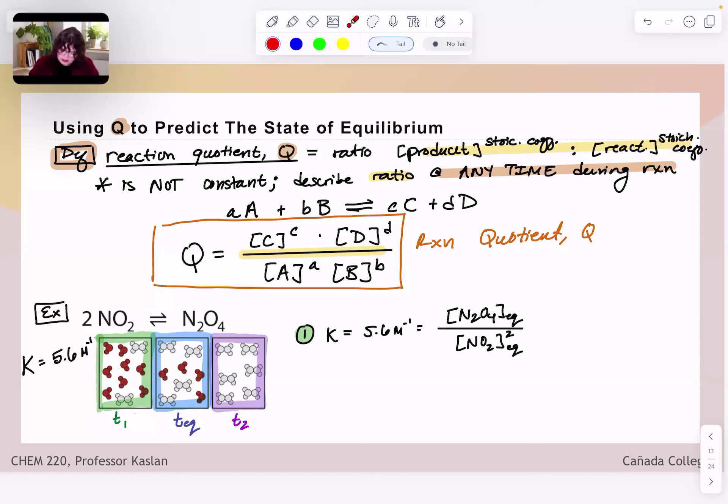So then what about Q? If we were to write a Q expression for this reaction, so Q would be equal to concentration N2O4 at time T1 over concentration NO2 squared at time T1.